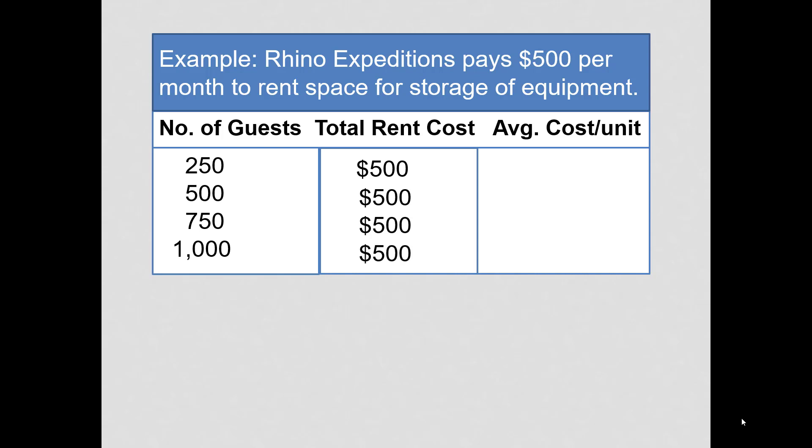But because that numerator stays the same, the average cost per unit will change. At 250 guests, it's $2 per unit. At 500 guests, it's $1 per unit. At 750 guests, it goes to $0.67 a unit. And at 1,000 guests, $0.50 per guest.